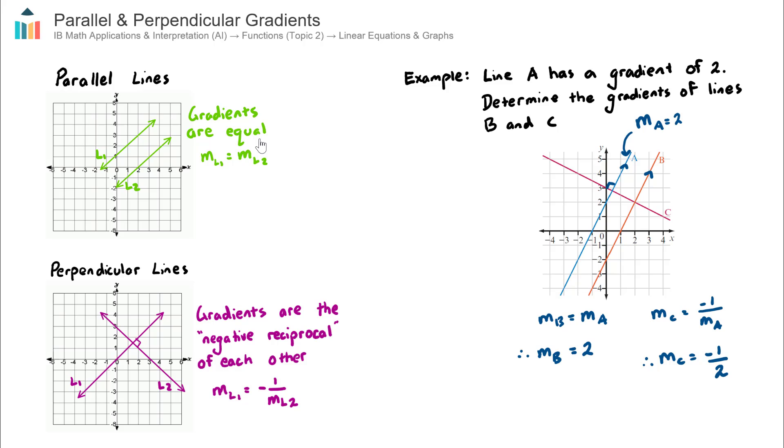Just to recap, parallel lines have equal gradients, perpendicular lines have negative reciprocal gradients of each other. And that concludes our video on parallel and perpendicular gradients of linear lines.